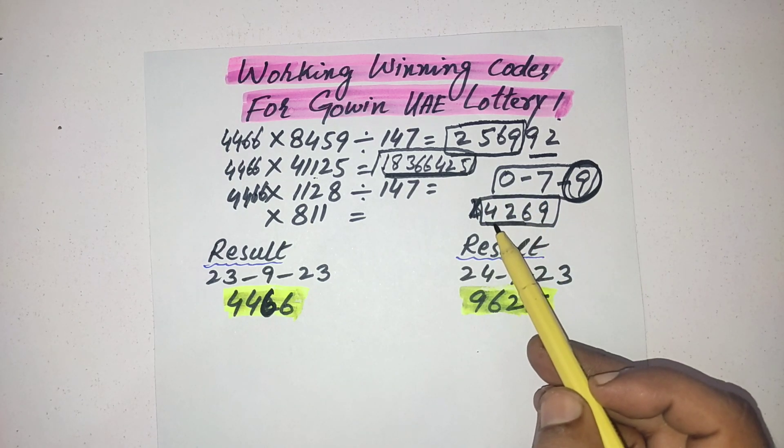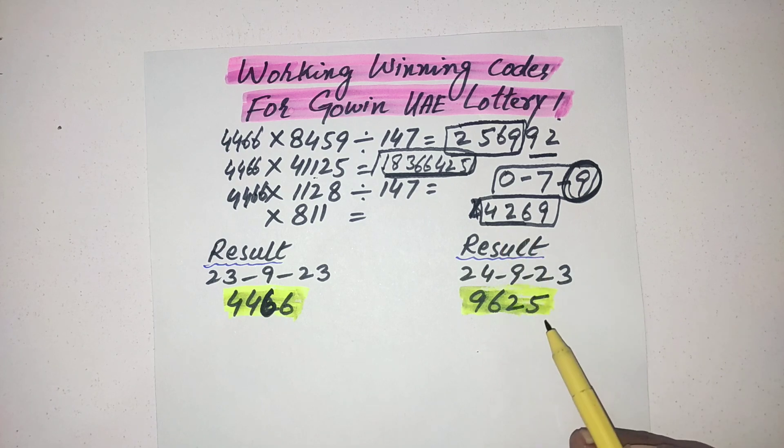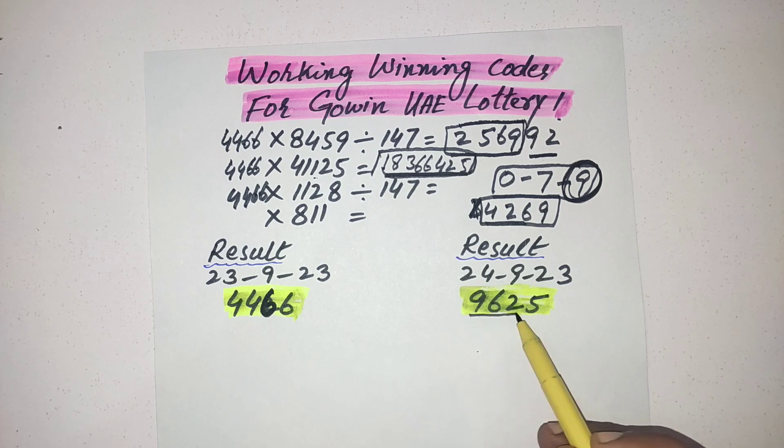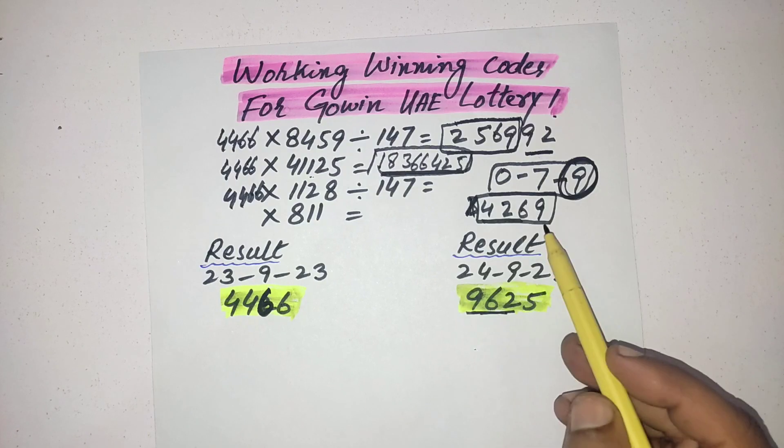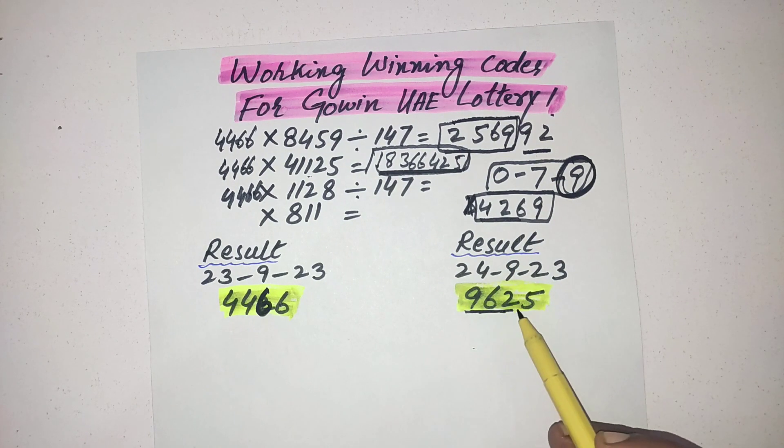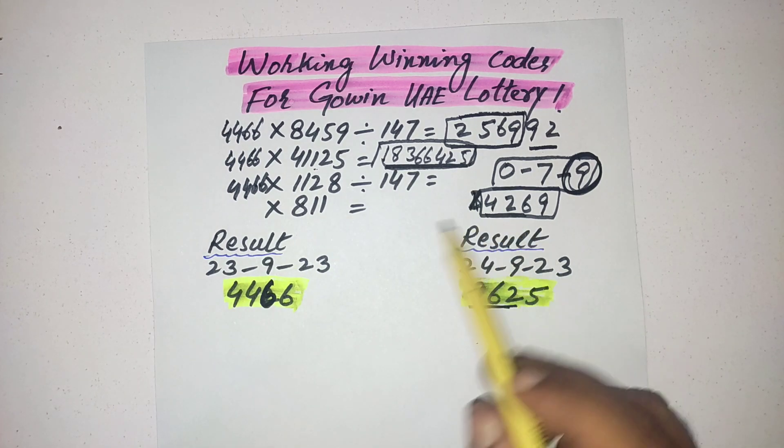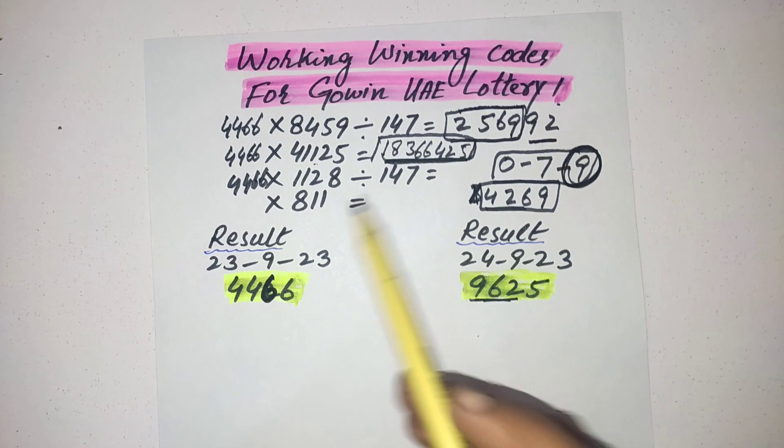In this condition, you leave the first number and take the last four numbers. You can see only one number was missed and replaced with five. Remaining three numbers came exactly as the result, 962.